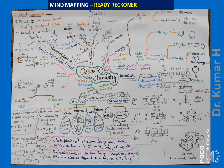Closed chain compounds are cyclic compounds, whereas open chain compounds are called acyclic compounds. This is the broad classification. Within acyclic compounds there are saturated compounds and unsaturated compounds.